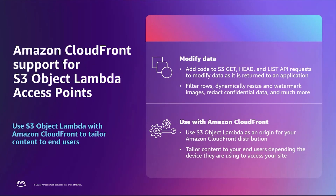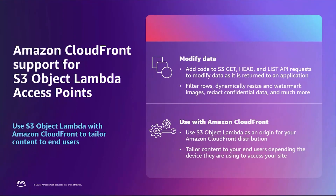During AWS Pi Day 2023, we introduced CloudFront support for S3 Object Lambda. Now, customers with image sharing applications can use S3 Object Lambda to customize images on the fly and use Amazon CloudFront for caching at the edge. With this new integration, you can deliver customized content to your end users depending on various characteristics such as the device they are using to access your content or the country they are visiting from. Origin requests can be transformed by S3 Object Lambda and then the results of that transformation are cached by CloudFront.